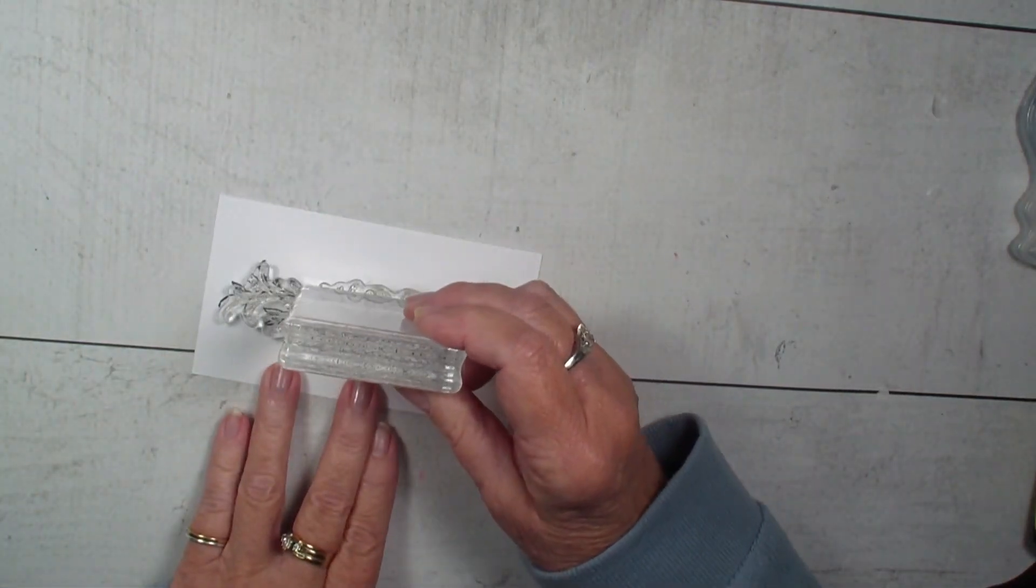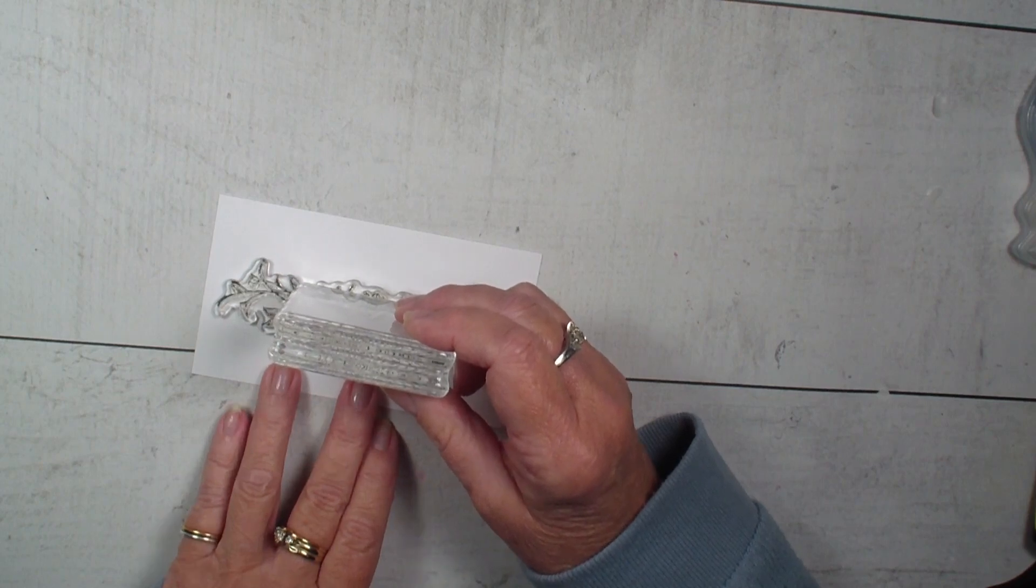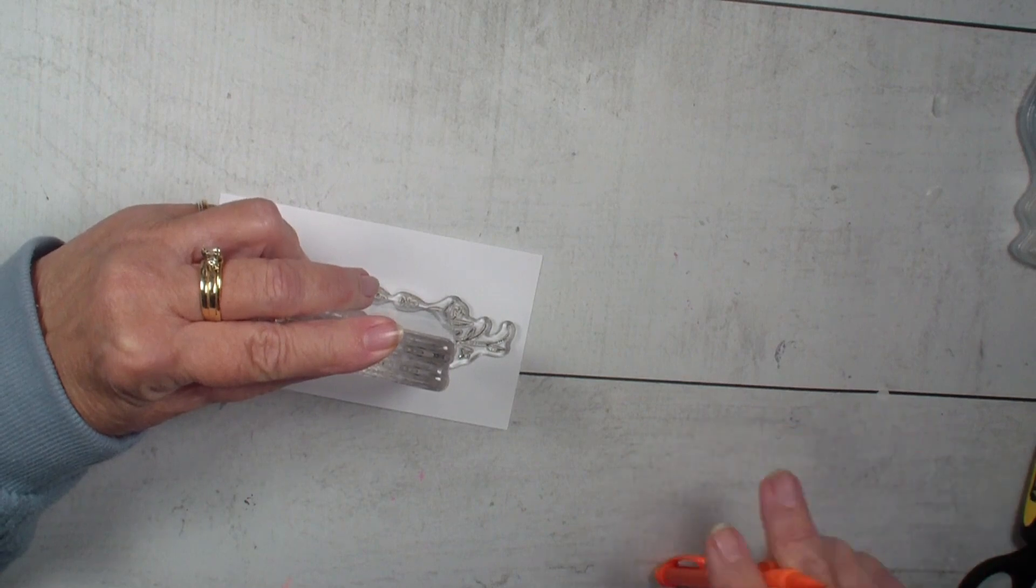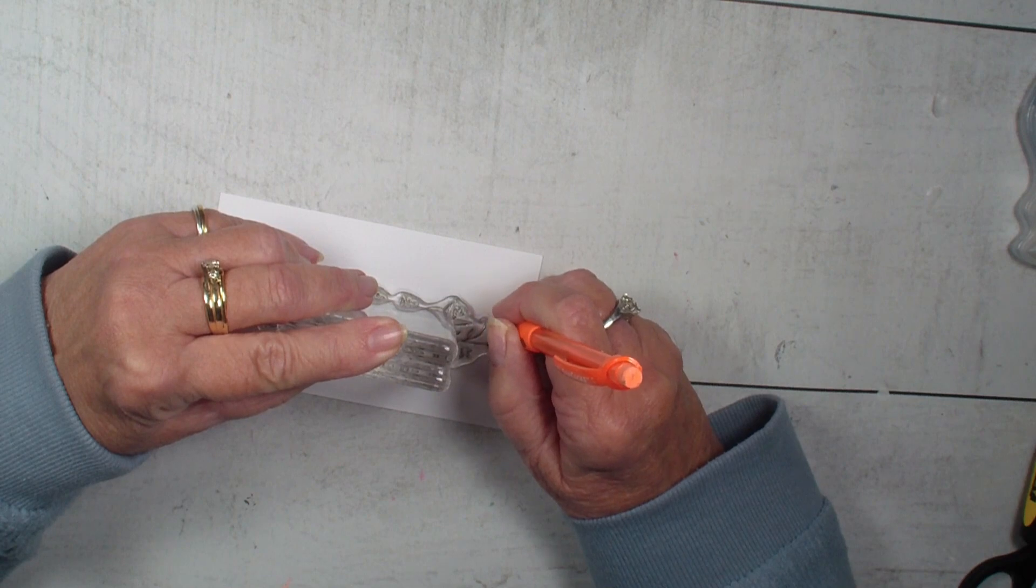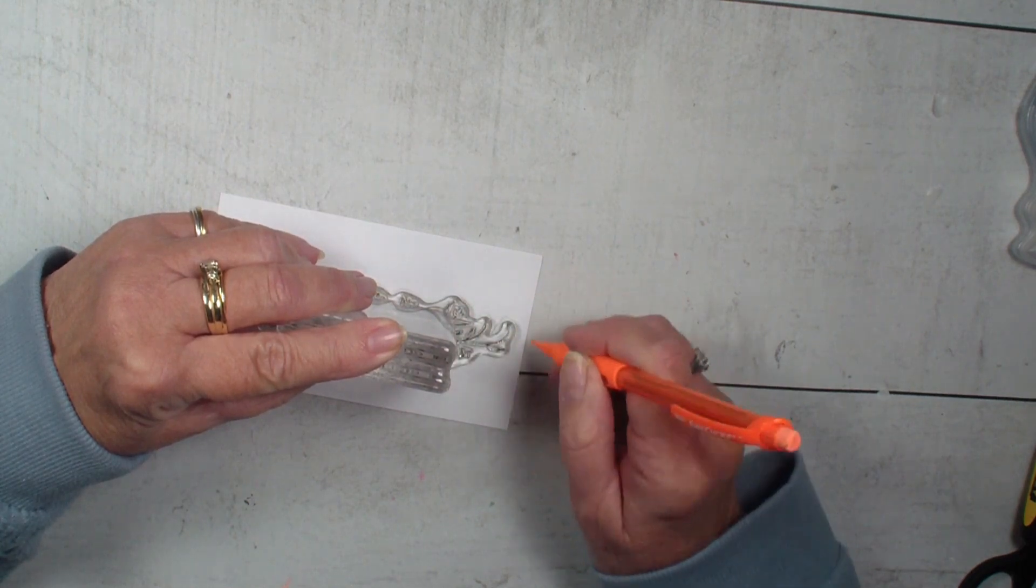So when you line it up, you're going to line it up perfectly on that image and then take your pencil and simply draw around that photopolymer and then it's easier to cut out.